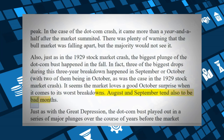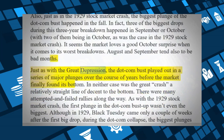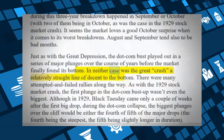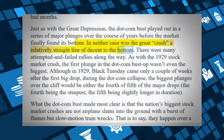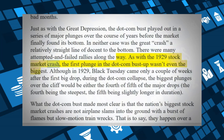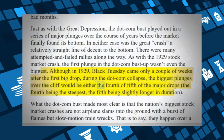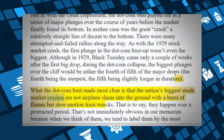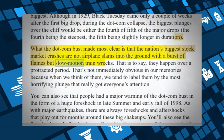August and September also tend to be bad months. Just as with the Great Depression, the dot-com bust played out in a series of major plunges over the course of years before the market finally found its bottom. In neither case was the great crash a relatively straight line of descent. There were many attempted and failed rallies along the way. The biggest plunges were the fourth or fifth of the major drops, not the first. What the dot-com bust made most clear is that the nation's biggest stock market crashes are not airplane slams into the ground, but slow-motion train wrecks.